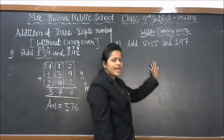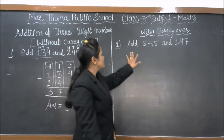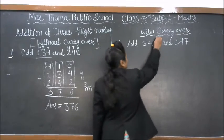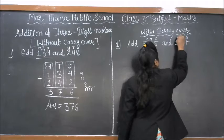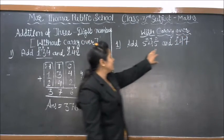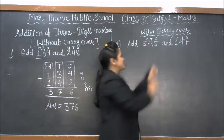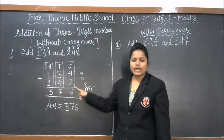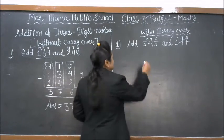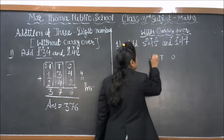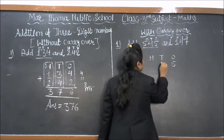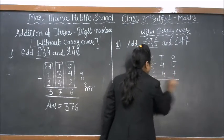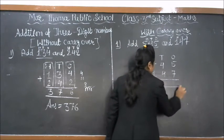Now we have addition with carry over. We arrange numbers in a column according to the place value chart with ones, tens, and hundreds. The first number is 545 and the next is 741. Always remember to put the addition sign.